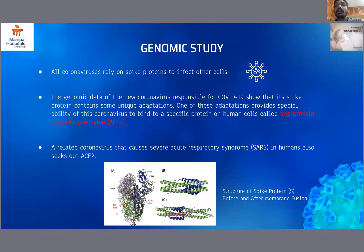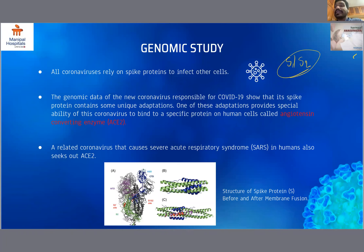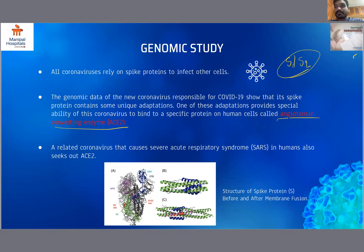Coming to the genomic study: all coronaviruses rely on spike protein to infect cells. Unlike other members of the Sarbeco virus sub-genus, SARS-CoV-2 has a spike protein containing a unique insertion that results in potential cleavage of the S1-S2 junction. This S1-S2 junction cleavage can enable proteolytic processing that enhances cell-to-cell transmission. The genomic data shows that the spike protein contains unique adaptations, including a special ability to bind to the specific protein on human cells called angiotensin-converting enzyme 2 (ACE2) — a binding mechanism also shared by the SARS coronavirus.